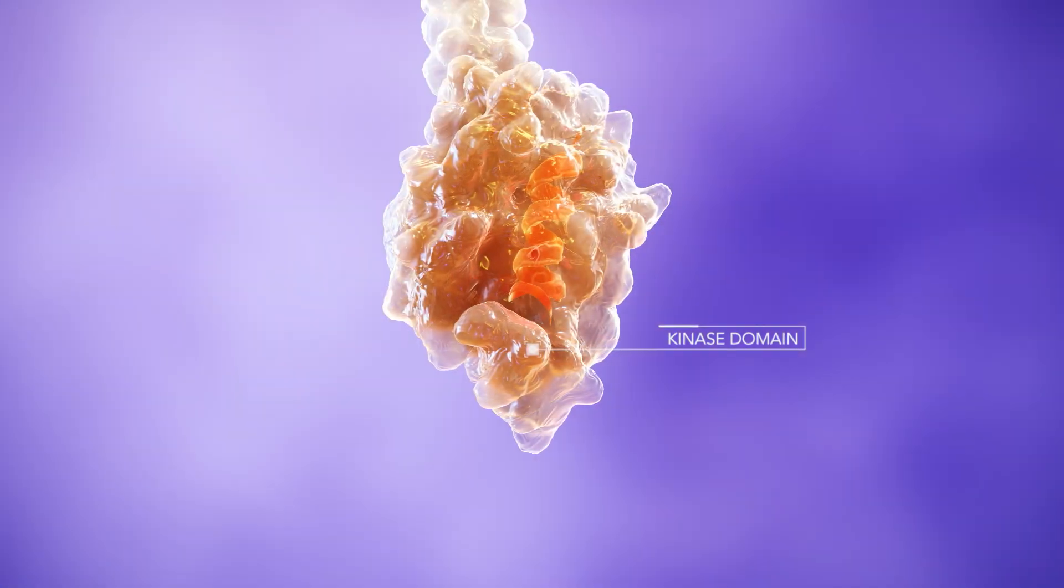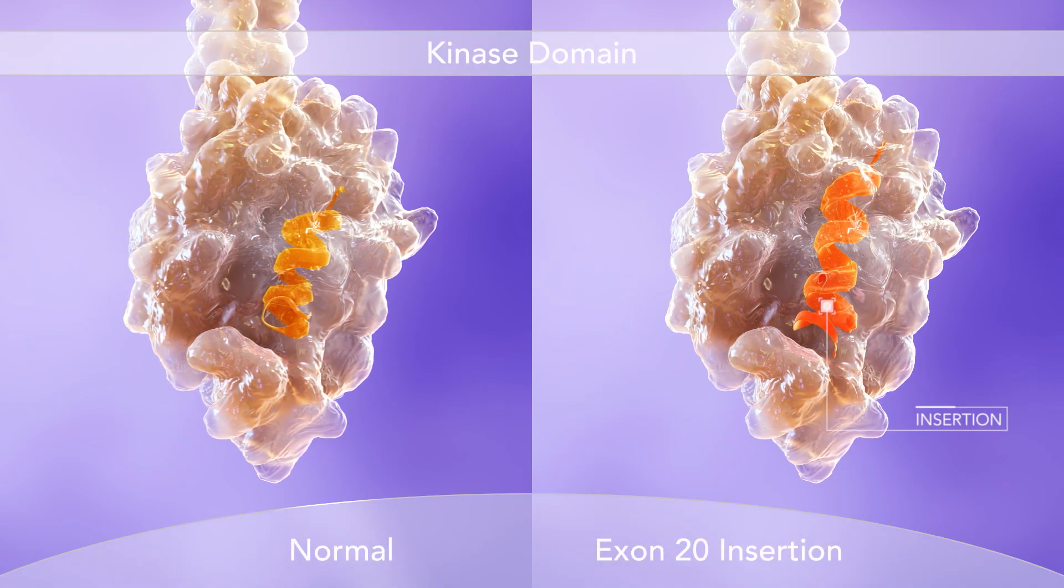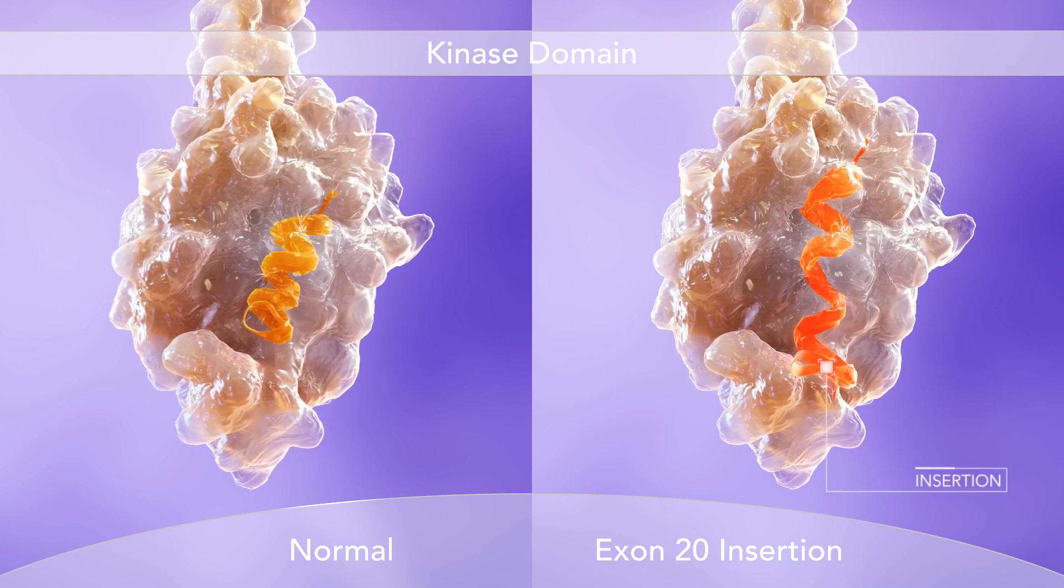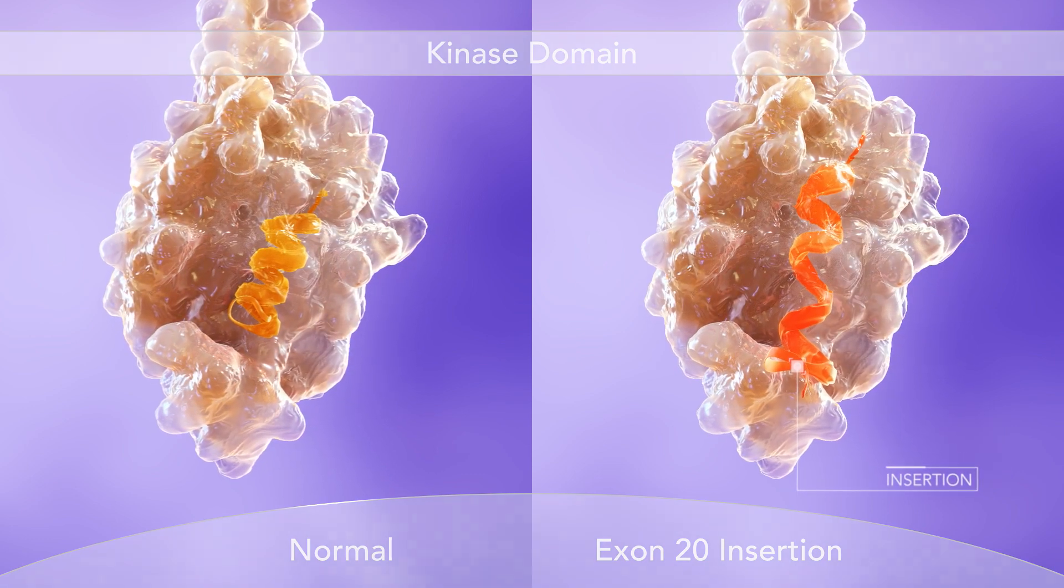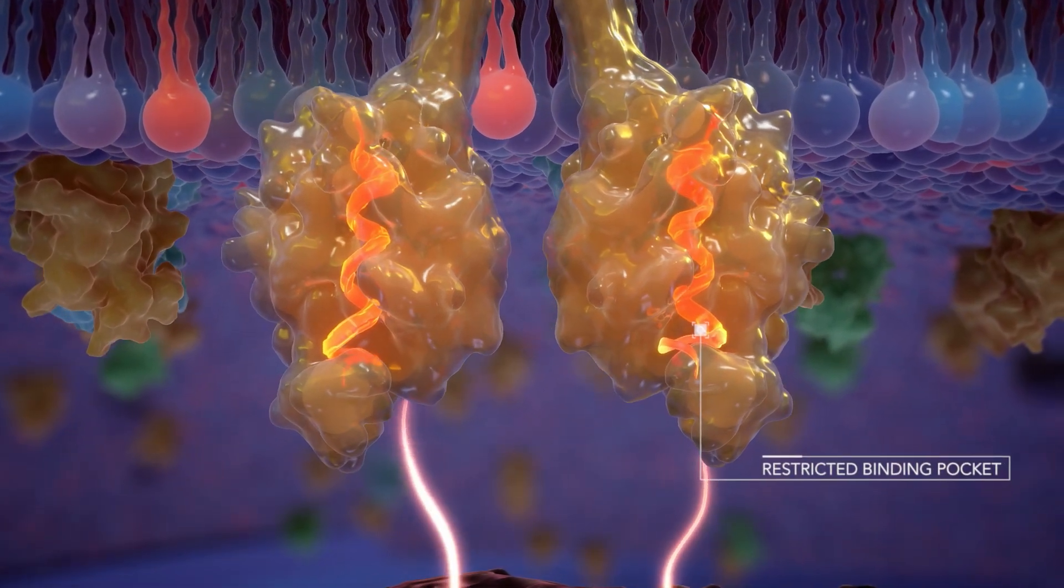Among the known activating mutations in EGFR and HER2, Exon 20 insertions add additional amino acids to the protein sequence, causing a conformational change heavily restricting access to the binding pocket of the kinase active site.